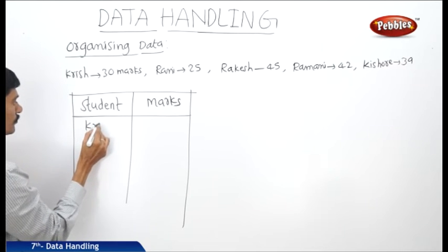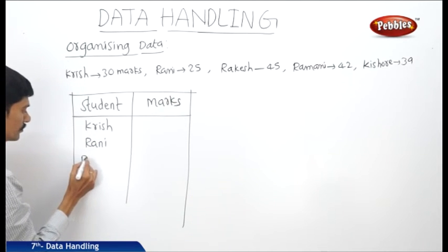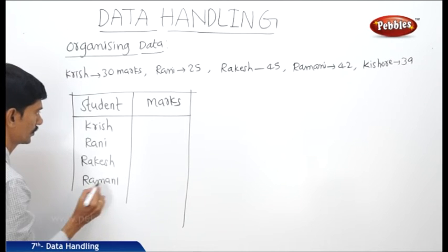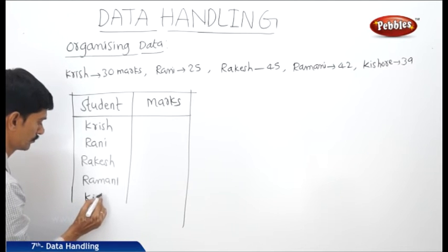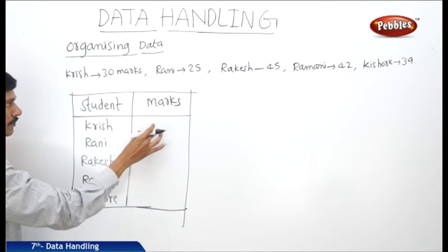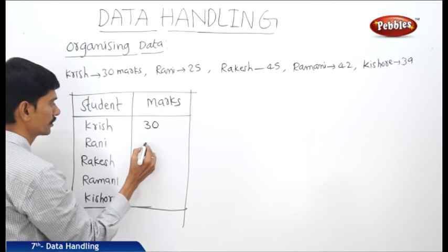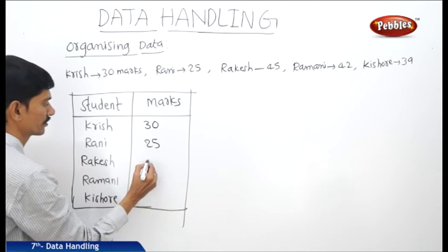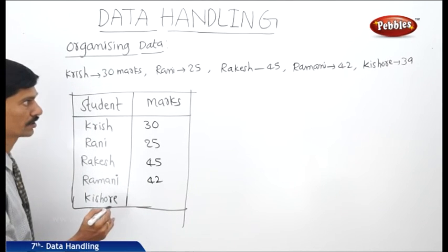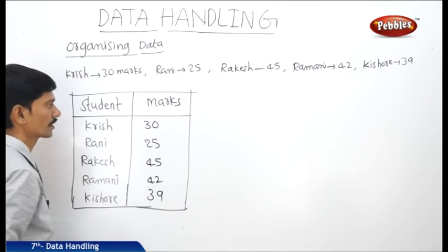The first student is Krish, the second is Rani, the third is Rakesh, then Ramani, and then Kishore. We take the different students in the first column and the marks of the students in the second column. Krish has got 30 marks, Rani has got 25 marks, Rakesh 45 marks, Ramani 42 marks, and Kishore has got 39 marks. This is the organization of data in the form of a table.